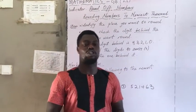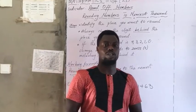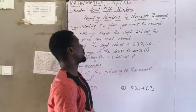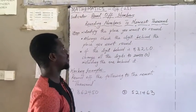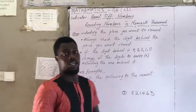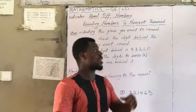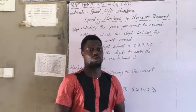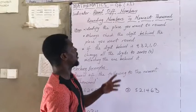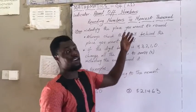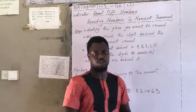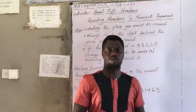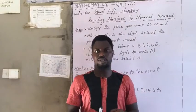We are going to continue from our last week's lesson. Last week we started with rounding of numbers. We looked at one part of it, which was rounding numbers to the nearest thousand.